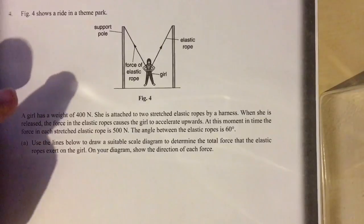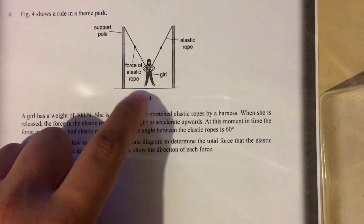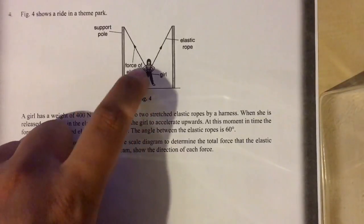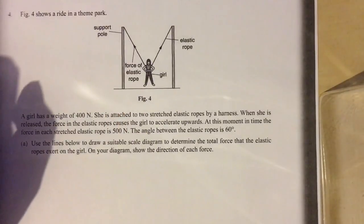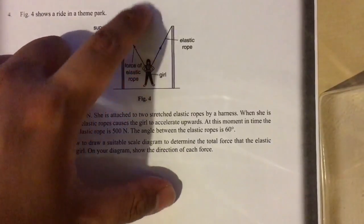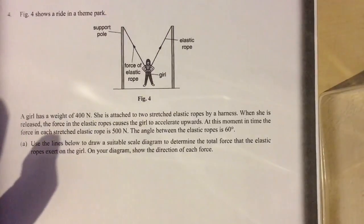A girl is actually strapped into two support poles. Her weight weighs downwards, but these two elastic strings pull upwards. Together, they should provide a perfect vertical force counter to the girl's weight.